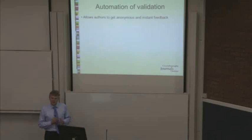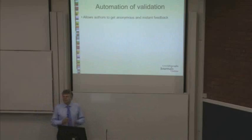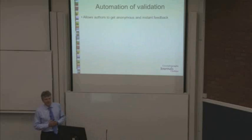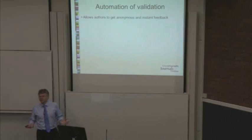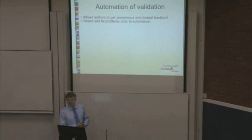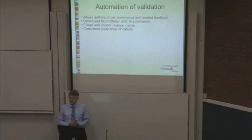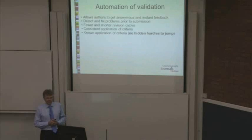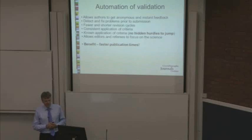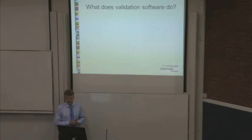The automation of validation allows authors to get anonymous and instant feedback. We have the checkCIF service on the web, which anybody can use freely, and you get fairly instantaneous feedback — some large structures will take a few seconds to run. It allows authors to detect and hopefully fix problems prior to submission, which can lead to fewer and shorter revision cycles. There's a consistent set of applied criteria — these are published and freely available, with no hidden hurdles that you have to jump. It allows editors and referees to focus on the science, and the benefit is faster publication times.